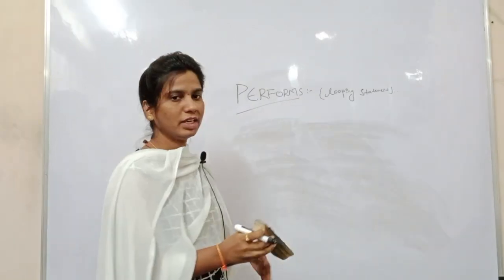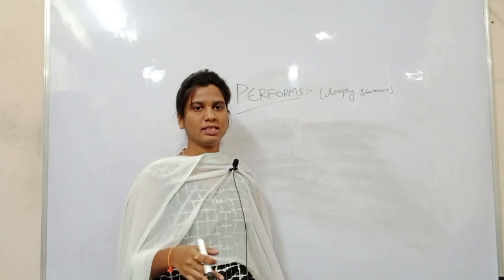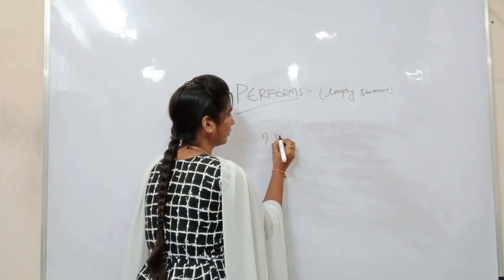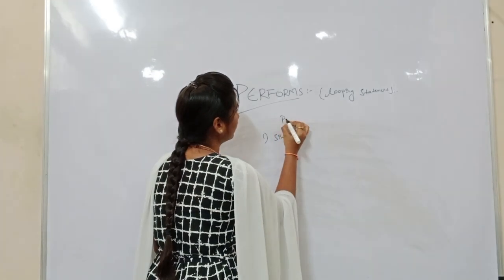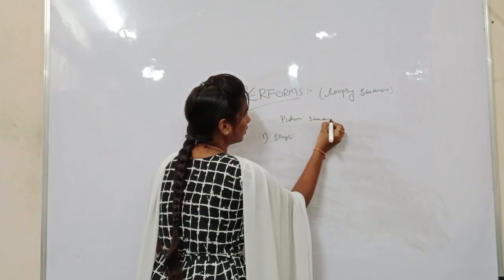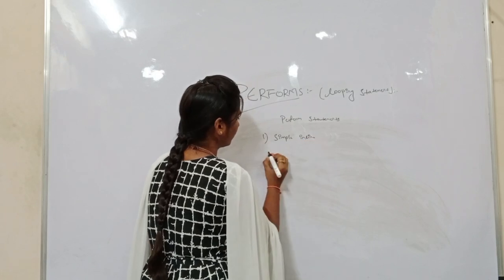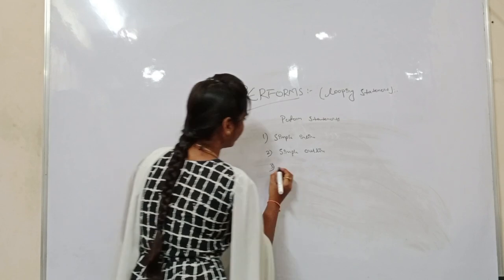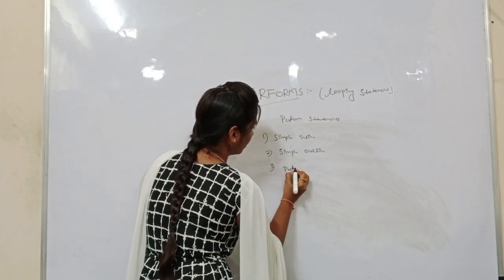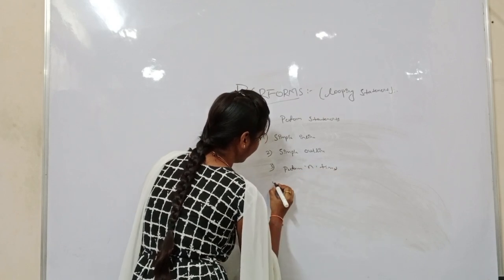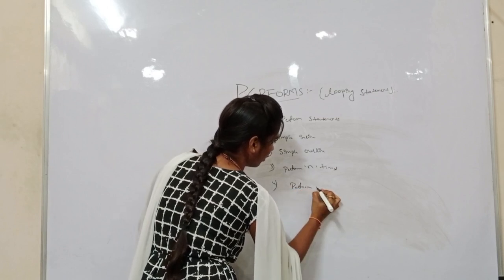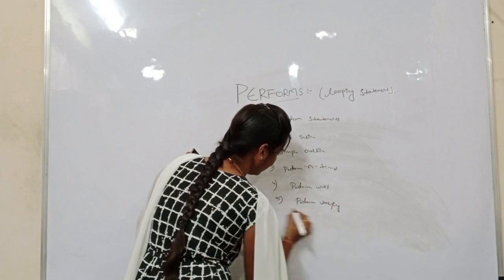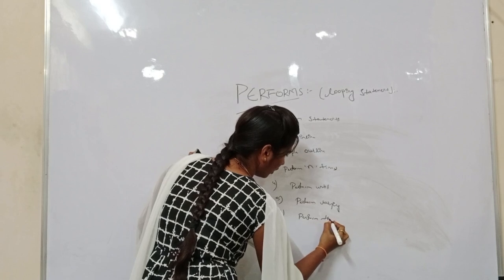We have six types — or four types — of PERFORM statements: simple inline, simple outline, PERFORM n times, PERFORM UNTIL, PERFORM VARYING, and PERFORM THROUGH.